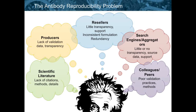You can also often reach out to your colleagues and peers. Similar to digging into the scientific literature, the problem is that people may not remember exactly which antibody they used. More importantly, they may not remember which lot they used, and there are variations, especially with polyclonal antibodies, from lot to lot. So you have to be really careful of that.